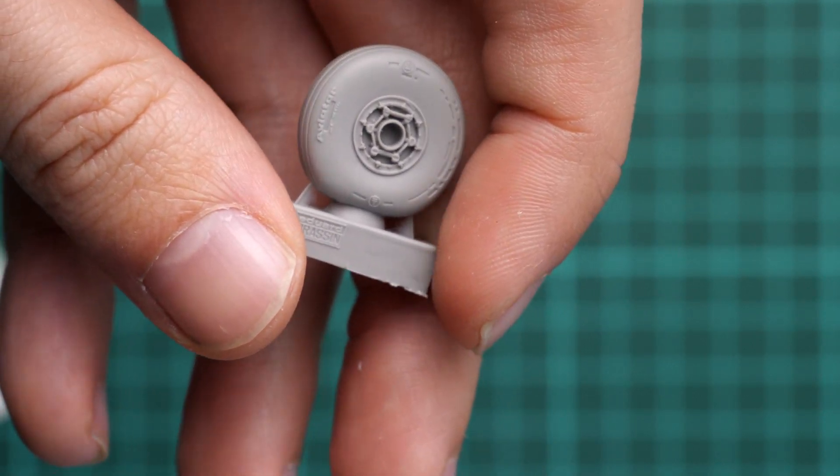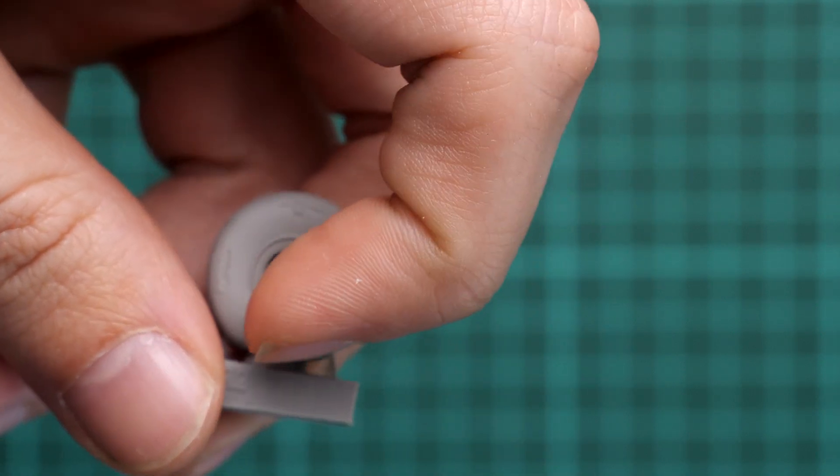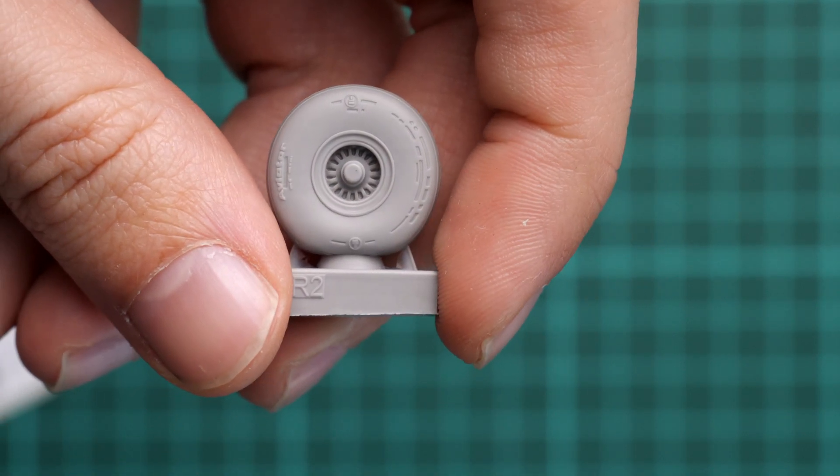So here as you can see we have the bottom part - it's slightly flat, which is actually used in order to replicate the weight effect. The same applies to the nose landing gear wheels.